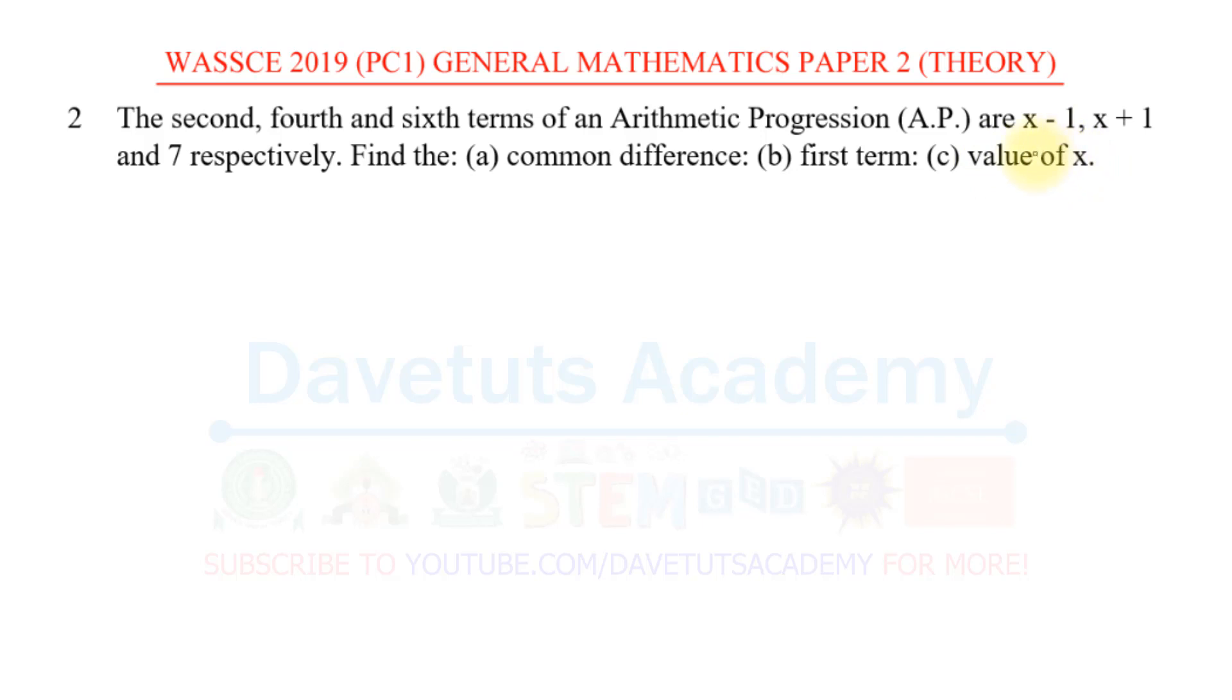To solve this question, first we need to know the formula for the nth term of an arithmetic progression and that is given as Tn = a + (n-1)d. Tn is the nth term, a is the first term, n is the number of terms and d is the common difference.